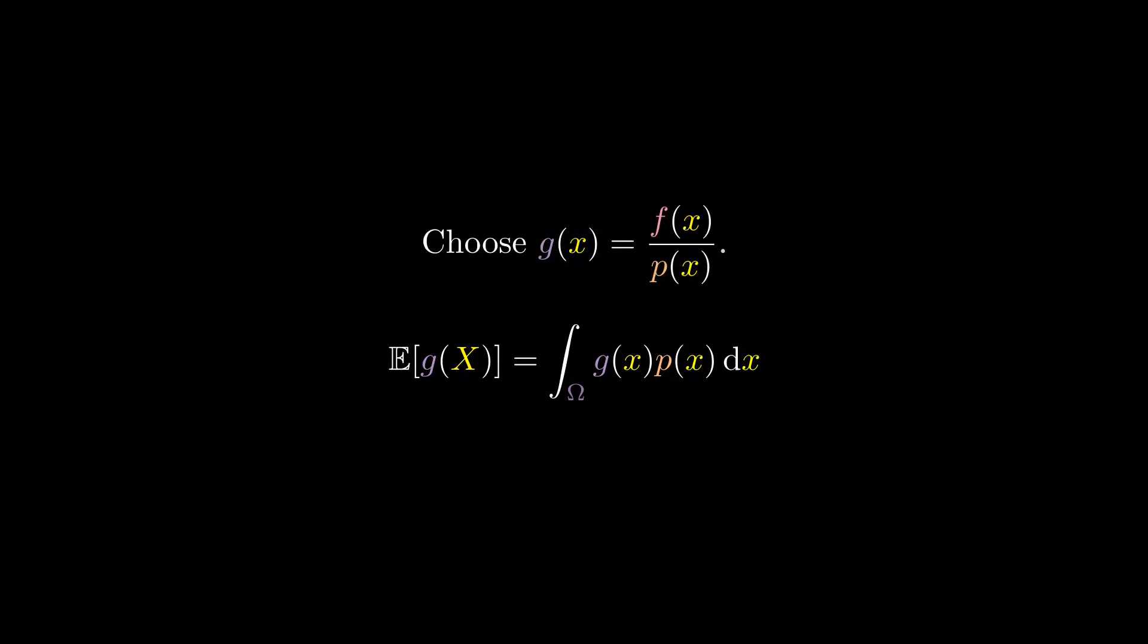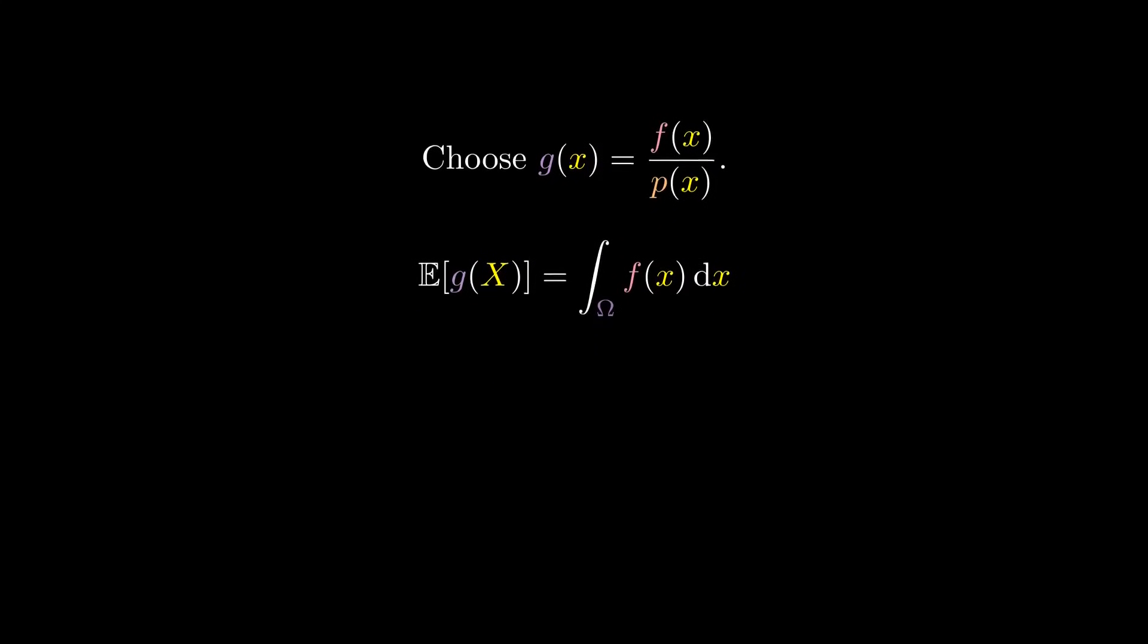Now, we can see that if we take G to be F divided by the density function of X, we have that this expected value is exactly equal to our original integral. This holds as long as it is defined, namely, the integral converges absolutely.